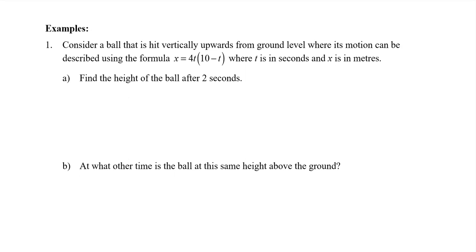Example 1: a ball is hit vertically upwards from ground level. Its motion is described by x = 4t(10 − t), where t is in seconds and x is in meters. Part a: find the height after 2 seconds. Substituting t = 2: x = 4(2)(10 − 2) = 64 meters.